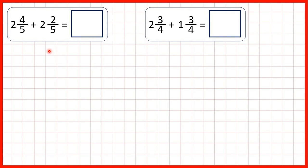Here we're adding mixed numbers. So first we have 2 and 4 fifths plus 2 and 2 fifths. If we add 4 fifths and 2 fifths, we get 6 fifths as our fraction, because when we add fractions, the denominators stay the same.